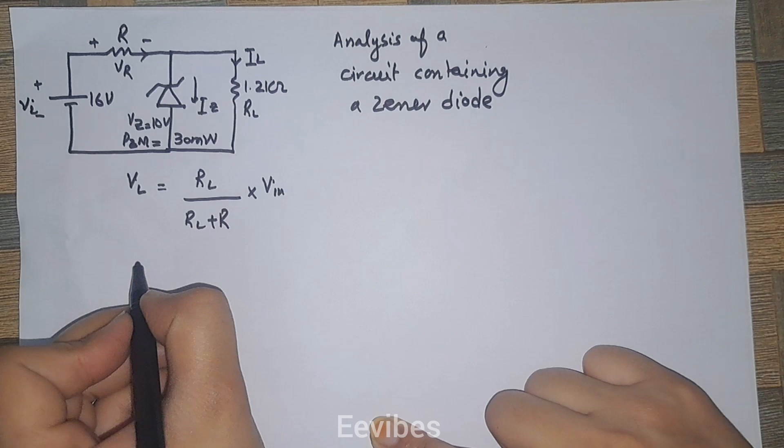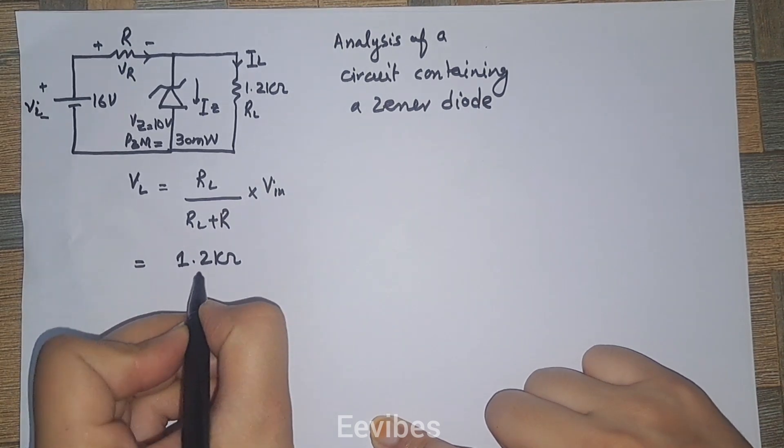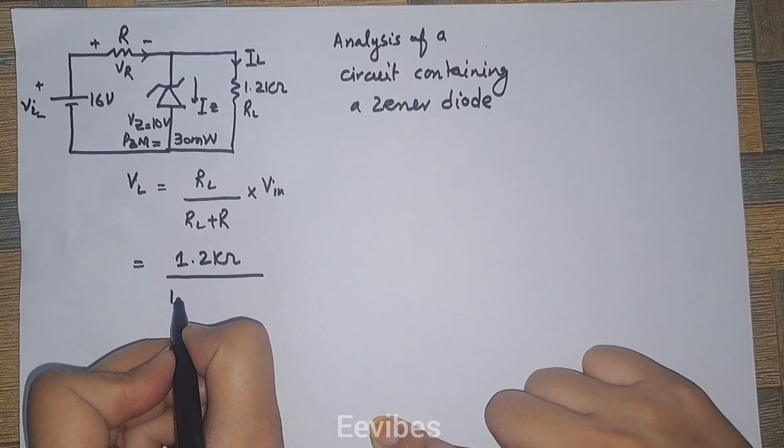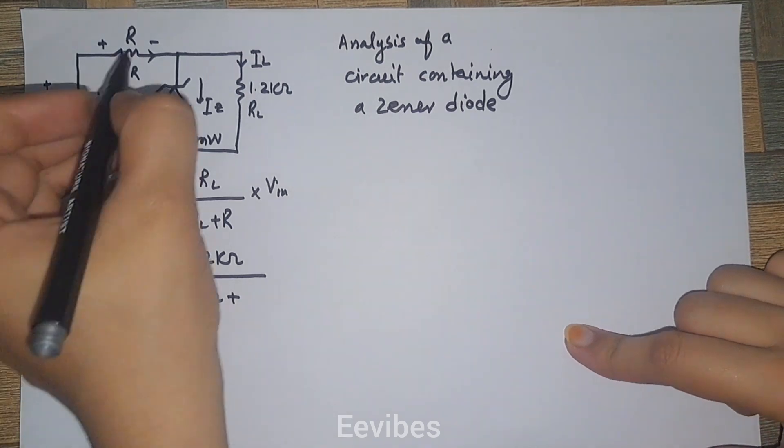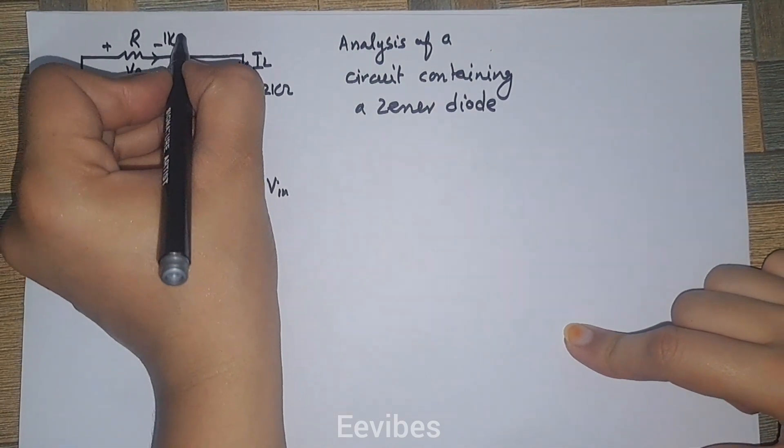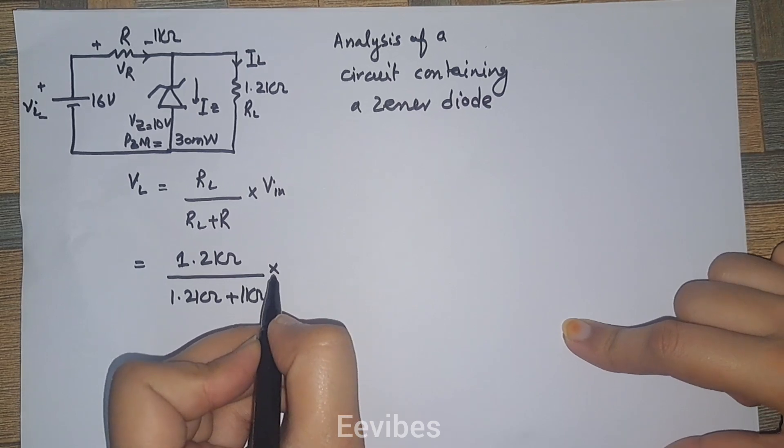Substituting the values, you'll get 1.2 kilohms divided by 1.2 kilohms plus the value of this resistance, which equals 1 kilohm, multiply by Vin equals 16 volts.